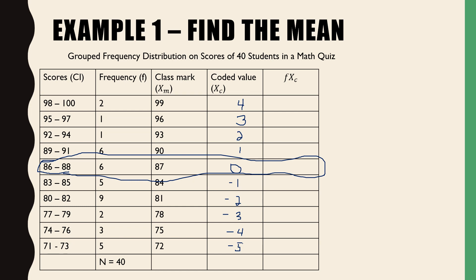Now we multiply the frequency by the coded value. 2 times 4 is 8. 1 times 3 is 3. 1 times 2 is 2. 6 times 1 equals 6. Then 0. 5 times negative 1 is negative 5. Then negative 18. Negative 6. Negative 12. And negative 25.